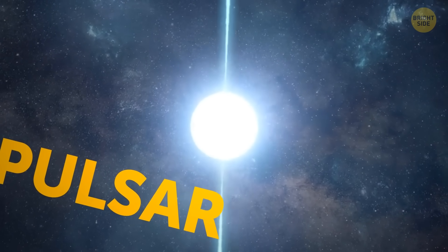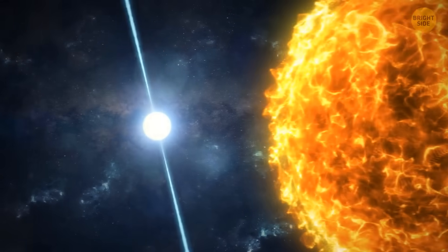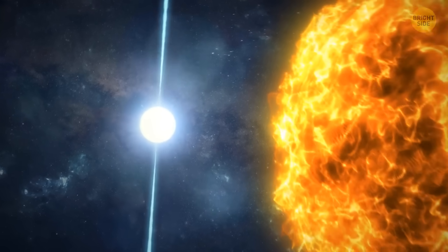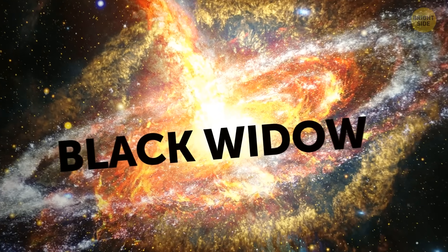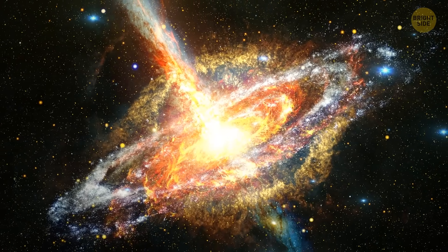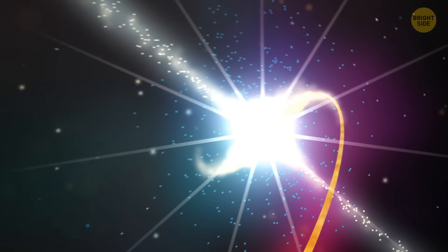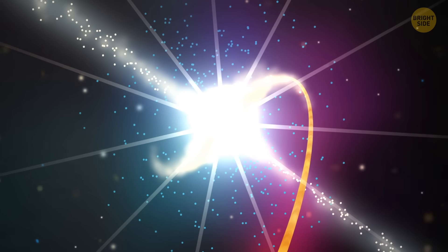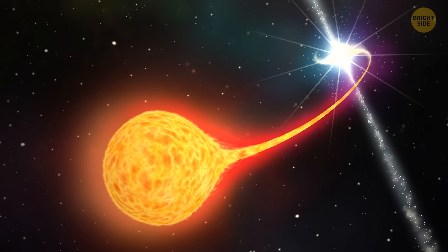Pulsars are spherical space objects the size of a large city, but they pack more mass than the entire sun. They radiate two narrow beams of light, sending them in opposite directions. The Black Widow Pulsar, just like its spider namesake, is munching on its partner. It's a lightweight brown dwarf star. The more material the pulsar consumes, the more slowly it spins. The energy the neutron star is losing in the process causes its companion star to dwindle.